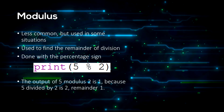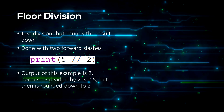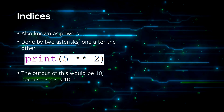If you can't remember, modulus returns a remainder after the first operand has been divided by the second operand. Floor division rounds a value down if it's a decimal. Indices, or exponents, or powers — for example, 2 to the power of 5 is 2 times 2 times 2 times 2 times 2.